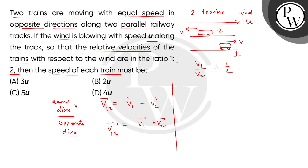The speed of first train, relative velocity of first train will be V minus U. Now we take second train's relative velocity with respect to wind.